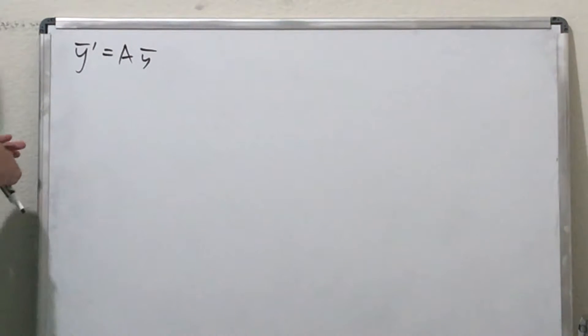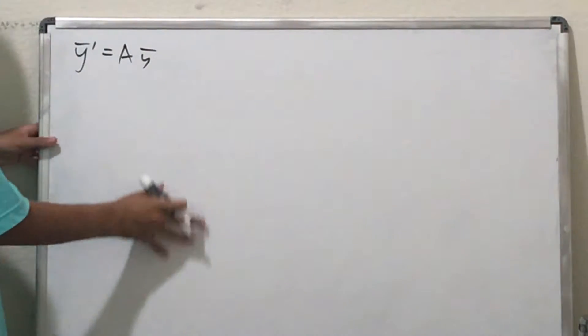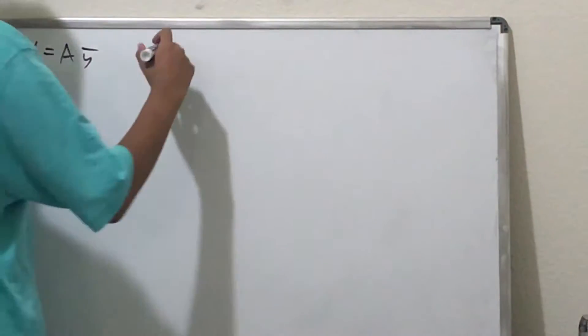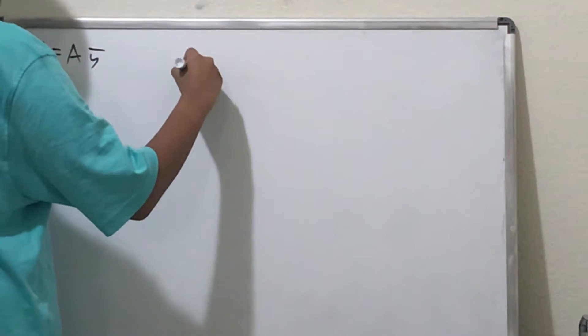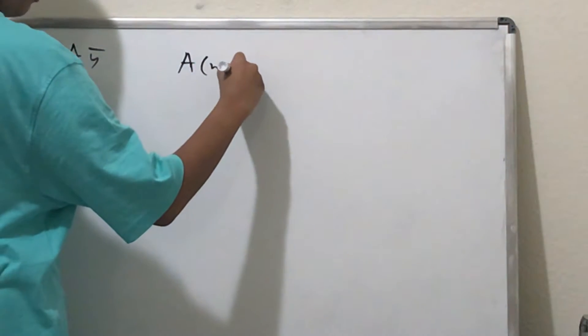So here we see that y' = Ay, where y is just a list of unknown functions. And this is obviously linear.